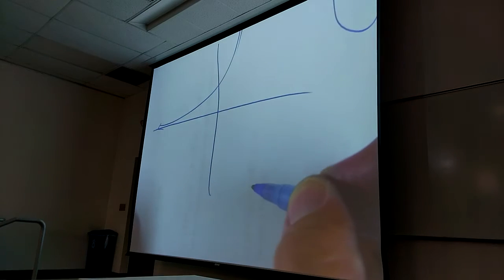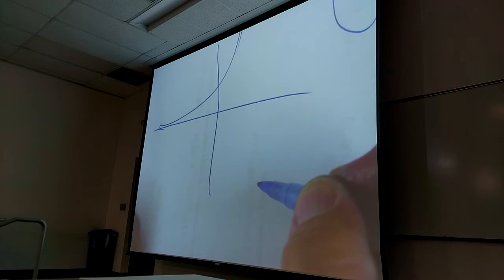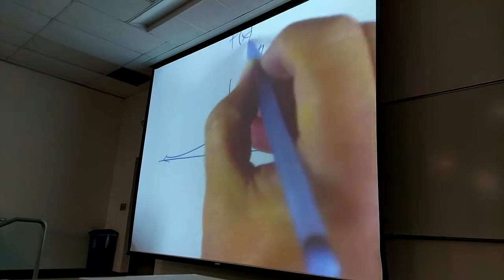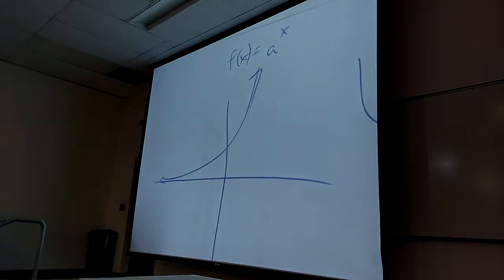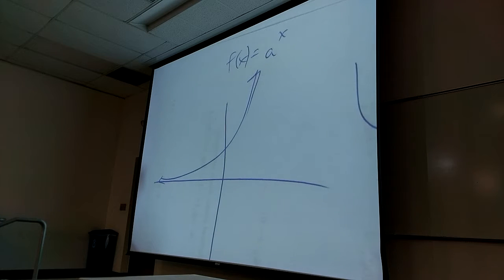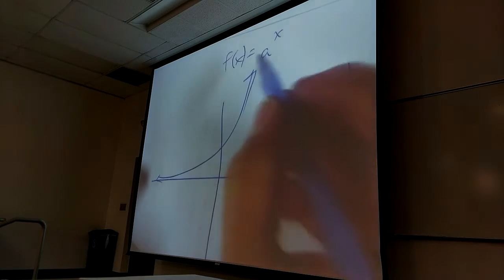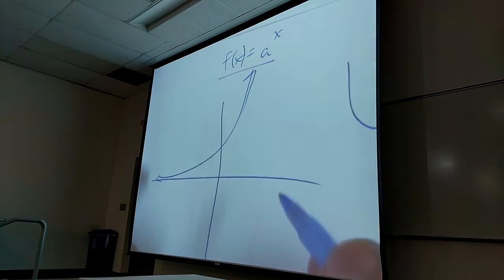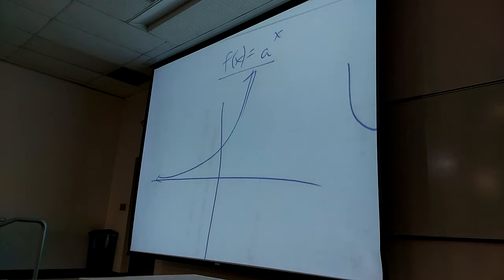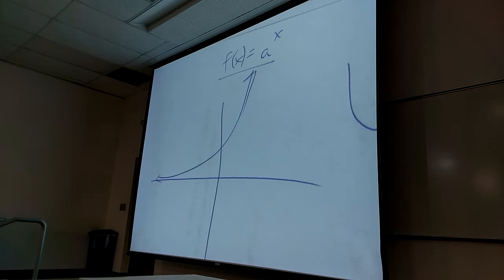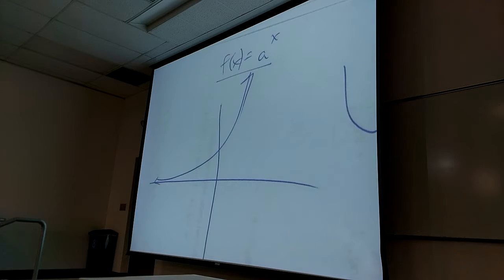If I invert this, what kind of function will I get? Because what kind of function was this one again? Exponential — a to the x. If I invert it, I'll get the inverse of an exponential. The logarithm. Logs — how do we create logarithms? We inverted the exponential. In fact, we graphed the thing before we even knew what it was, because it was just the inverse. Before we even gave it a name, we graphed the inverse of this guy. And then we gave it that name: log.